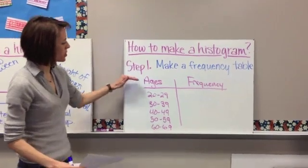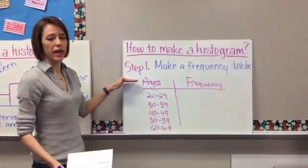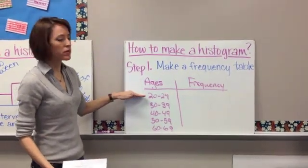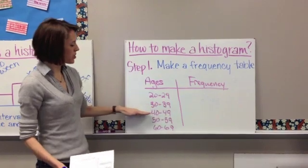Okay, so once you have your frequency table, what you're basically doing is that you're telling which data it is that you're counting, and we're counting the ages. And if you notice, I did intervals of 10, from 20 to 29 is 10, from 30 to 39 is 10, so on and so forth.